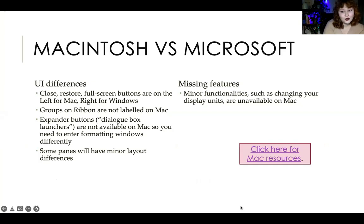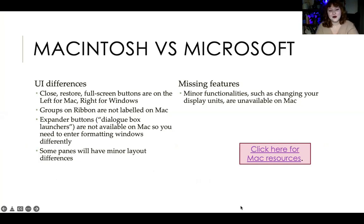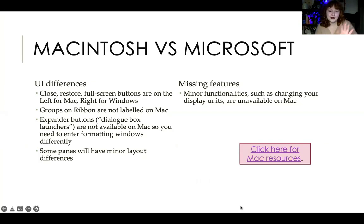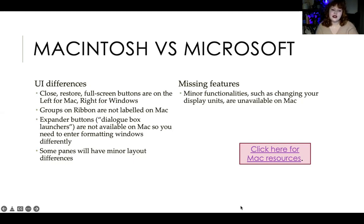What are the differences? There are some basic UI differences — UI being your user interface, so the layout and how you interact with it. On a Mac, your closing and opening full-screen buttons are on the left — upper left you'll find your exit — whereas on Windows it's on the right. On the ribbon, the groups are not labeled on Mac. The expander buttons or dialogue box launchers are also not available on Mac.